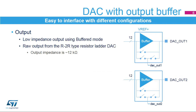The DAC output can be buffered for low impedance loads. When unbuffered, the output is directly connected to the R2R resistor ladder network type of DAC. The DAC output can also be internally connected to the comparator units.